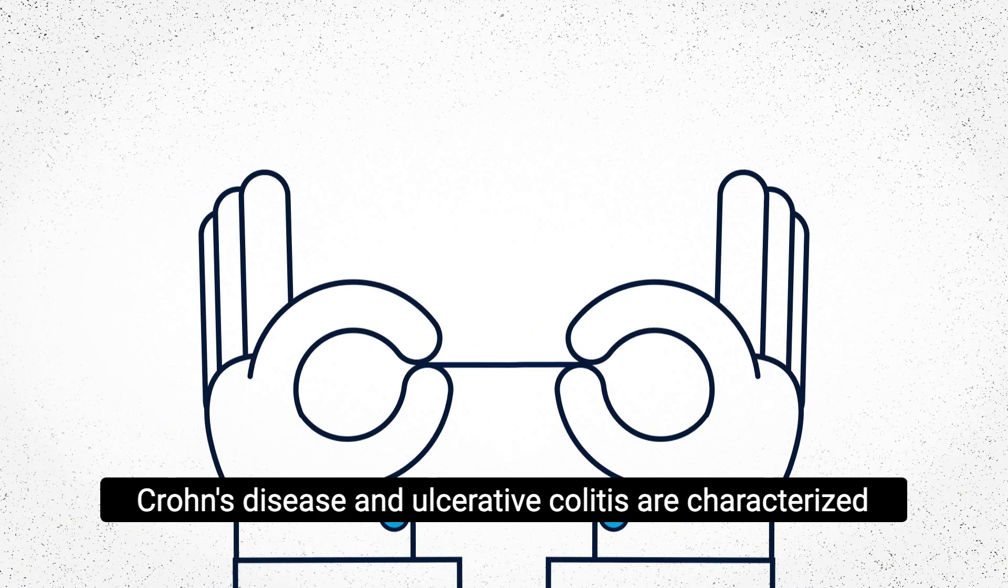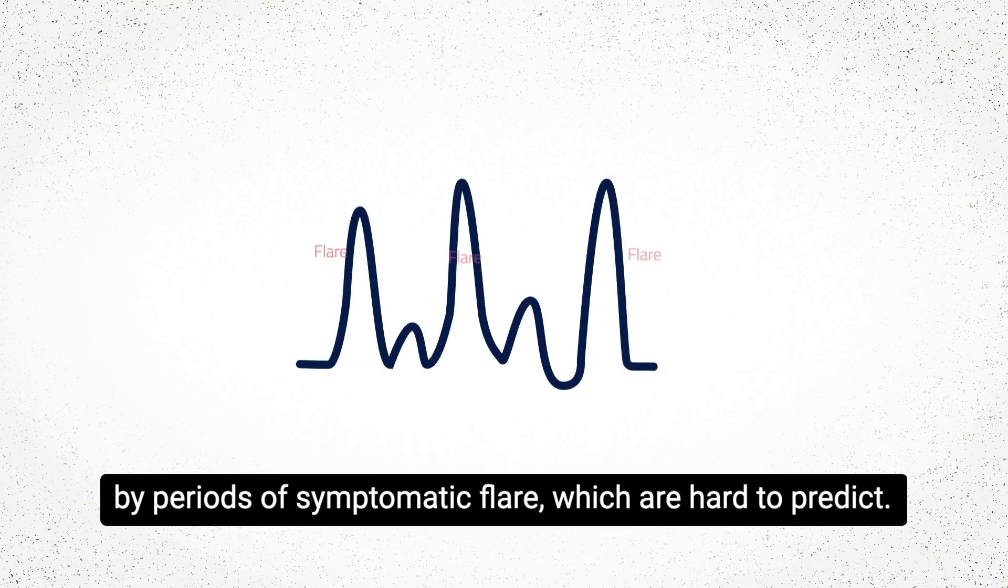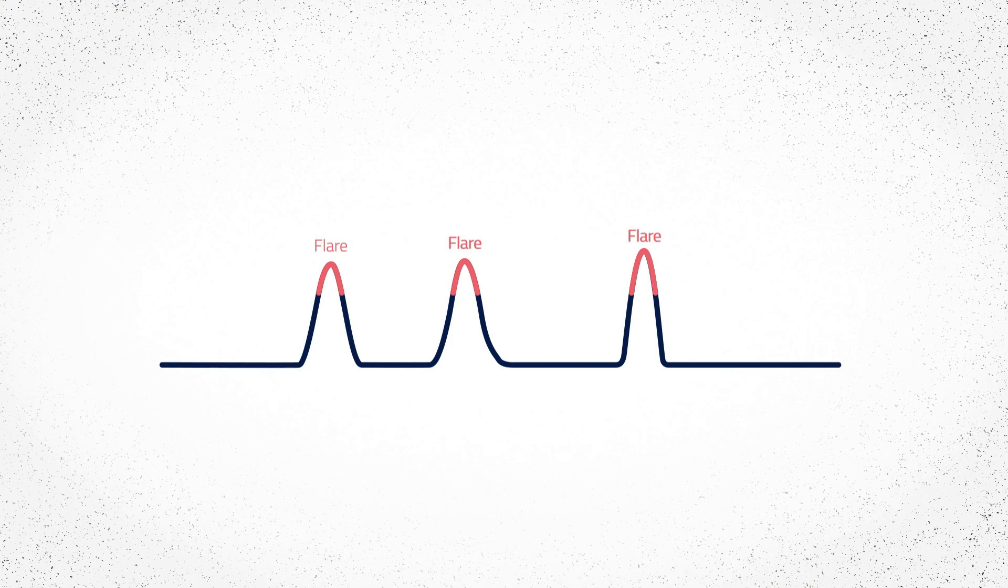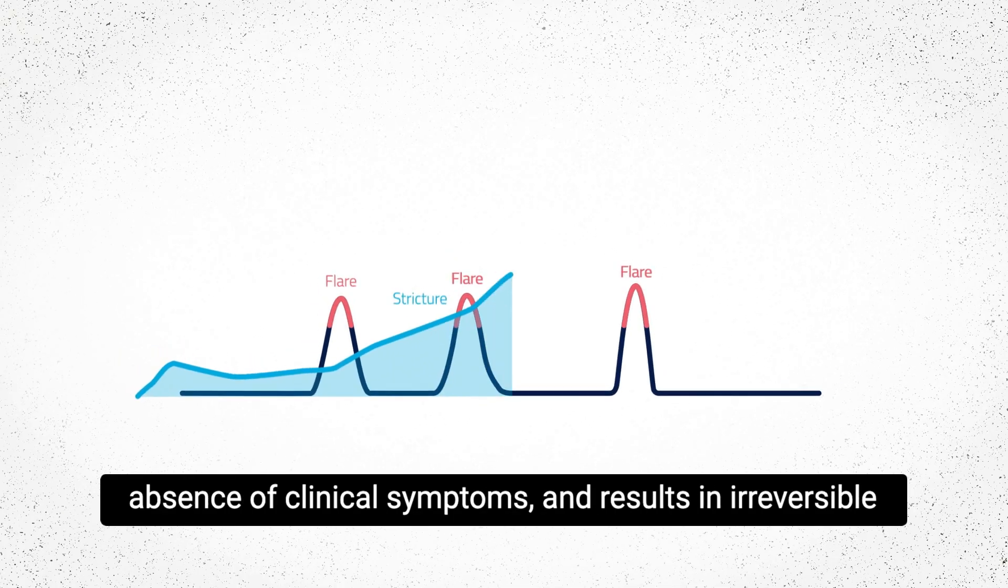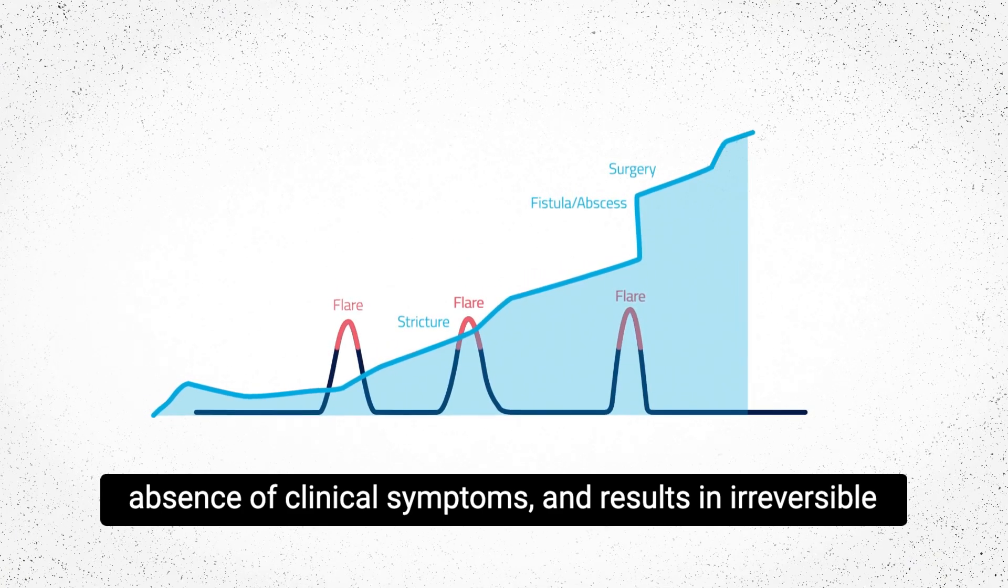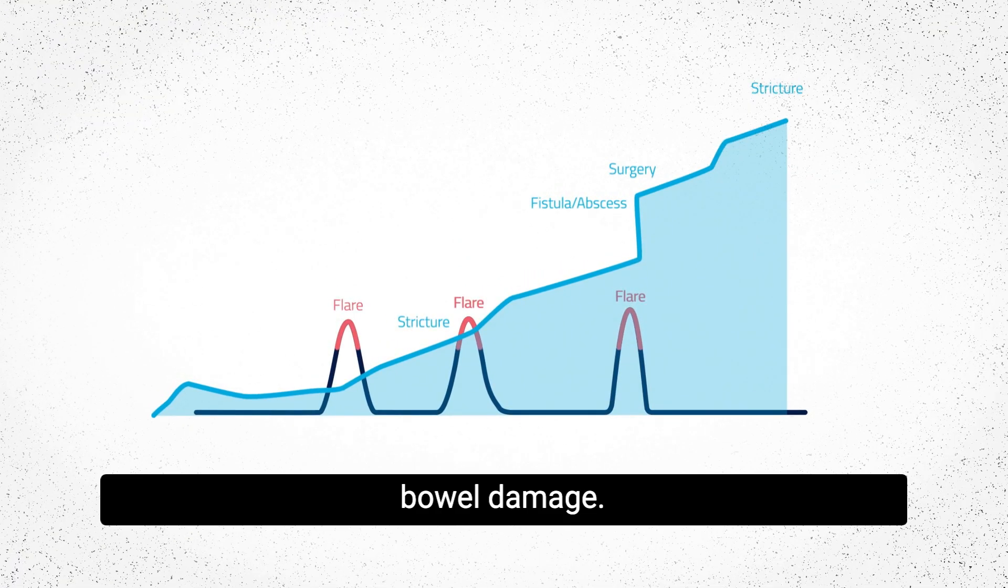Crohn's disease and ulcerative colitis are characterized by periods of symptomatic flare which are hard to predict. Uncontrolled inflammation frequently persists, even in the absence of clinical symptoms, and results in irreversible bowel damage.